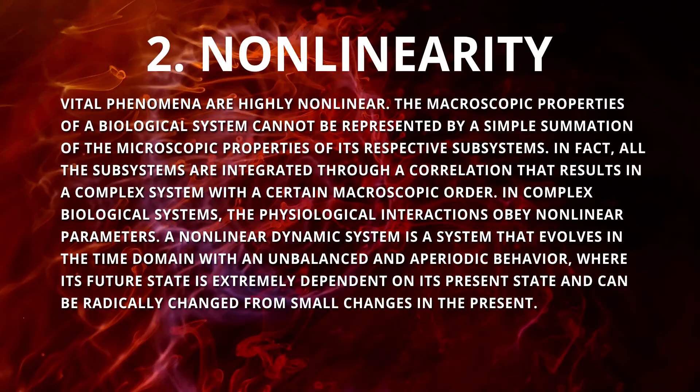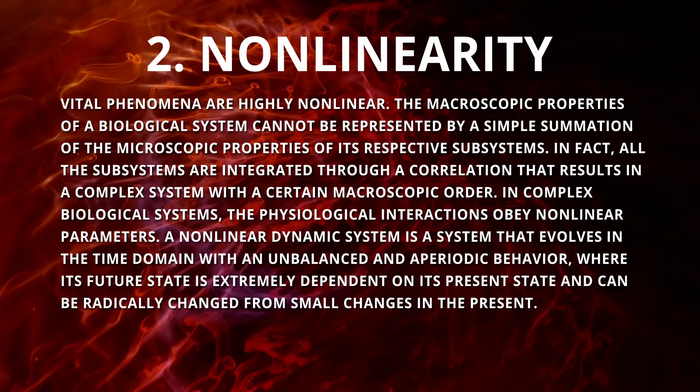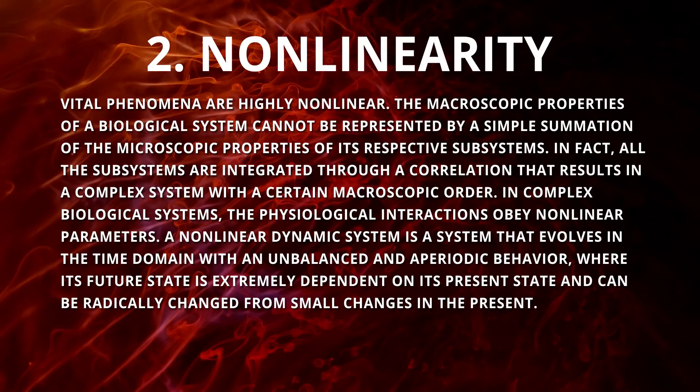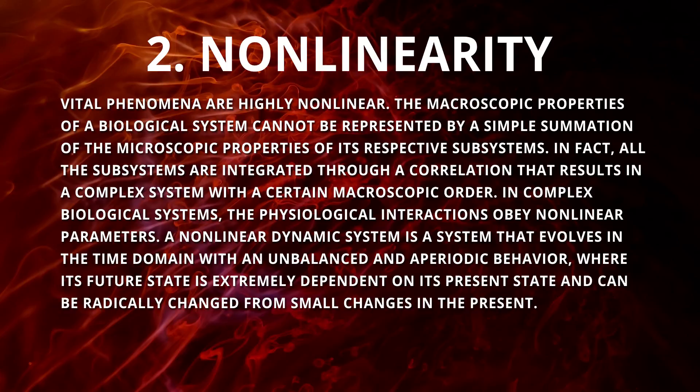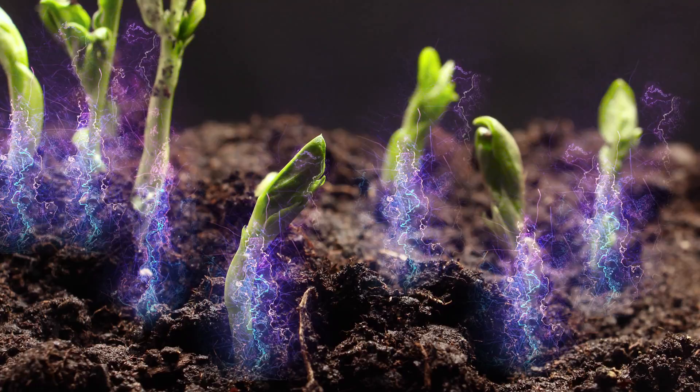In complex biological systems, the physiological interactions obey non-linear parameters. A non-linear dynamic system is a system that evolves in the time domain with an unbalanced and aperiodic behavior, where its future state is extremely dependent on its present state and can be radically changed by small changes in the present. 3. Cooperativity: Life actions are collective efforts of many biological subjects, and there is cooperation between the individual subjects. In short, quantum coherence is related to the ability that photons have to work synergistically and collaboratively, organizing biological processes.